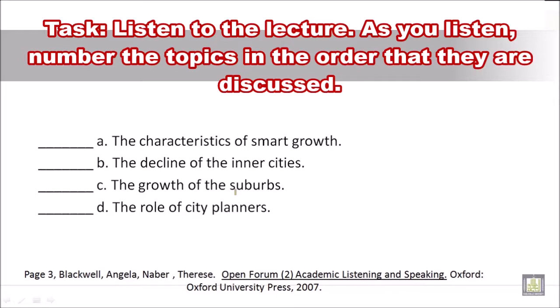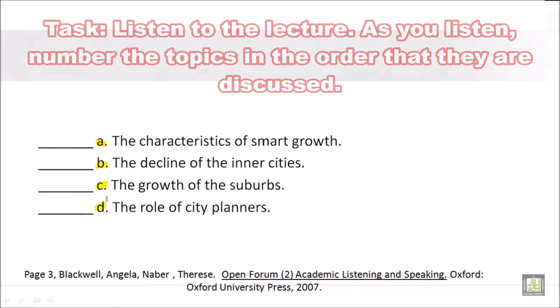As you listen, number the topics in the order that they are discussed. Here are the topics: A, the characteristics of smart growth; B, the decline of the inner cities; C, the growth of suburbs; and D, the role of city planners.